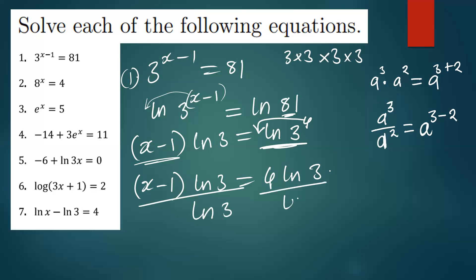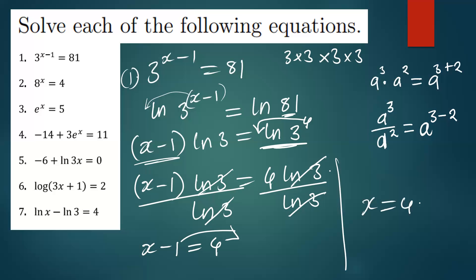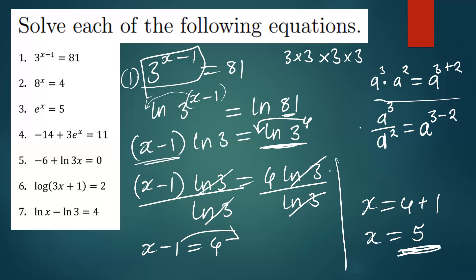We divide both sides by ln(3) — those cancel — and we're left with x - 1 = 4. Taking the 1 to the other side: x = 4 + 1, so x = 5. You can also first split using the division rule for indices and still get the same answer.